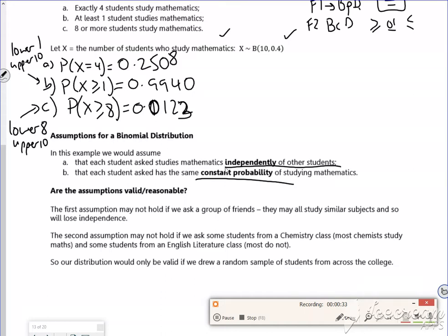And the second assumption, so it says the second assumption may not hold if students from a chemistry class, most chemistry students, are going to maths. So it's just talking about if it would work like that, sort of revision.